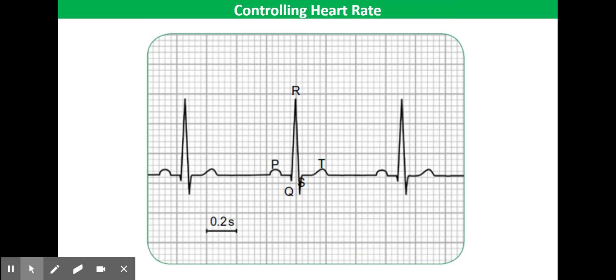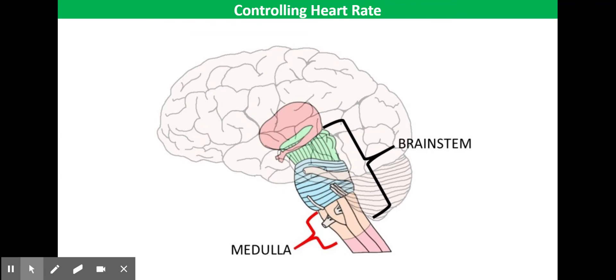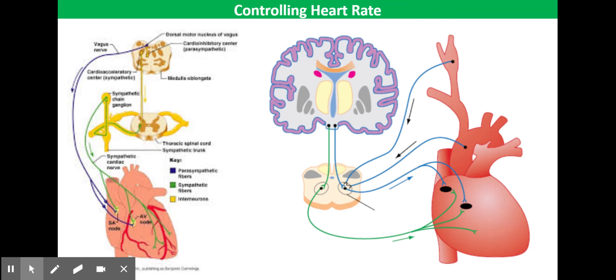But the frequency of these excitatory waves can be altered by the output from the cardiovascular centre in the medulla oblongata. So the medulla oblongata is based at the bottom of the brainstem, as shown on the slide there in front of you. Nerves from the cardiovascular centre in the medulla oblongata of the brainstem supply the SAN in the heart. Now these nerves are part of the autonomic nervous system, and they don't initiate a contraction, but they can affect the frequency of contractions.